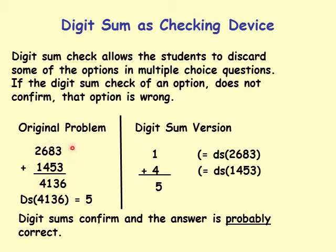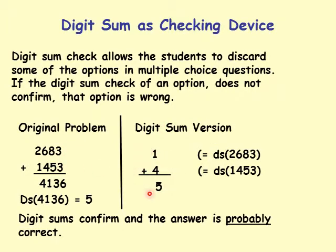Before declaring an answer right or wrong, do sanity checks. The number of digits on each line should be consistent — 4 digits plus 4 digits should give roughly 4 digits. The leftmost digit of the result should be at least the sum of the leftmost digits of the addends: 2 plus 1 is 3, and we have 4, which checks out. The rightmost digits: 3 plus 3 equals 6, which also checks.